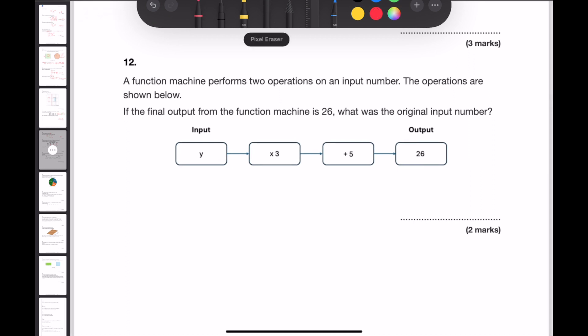Question 12. A function machine performs two operations on an input number. The operations are shown below. If the final output from the function machine is 26, what was the original input? To answer this question, we need to work backwards. Instead of adding 5, we're going to take away 5. And instead of timesing by 3, we're going to divide by 3. So following these operations, 26 take away 5 is 21. And 21 divided by 3 is 7. Y is 7.